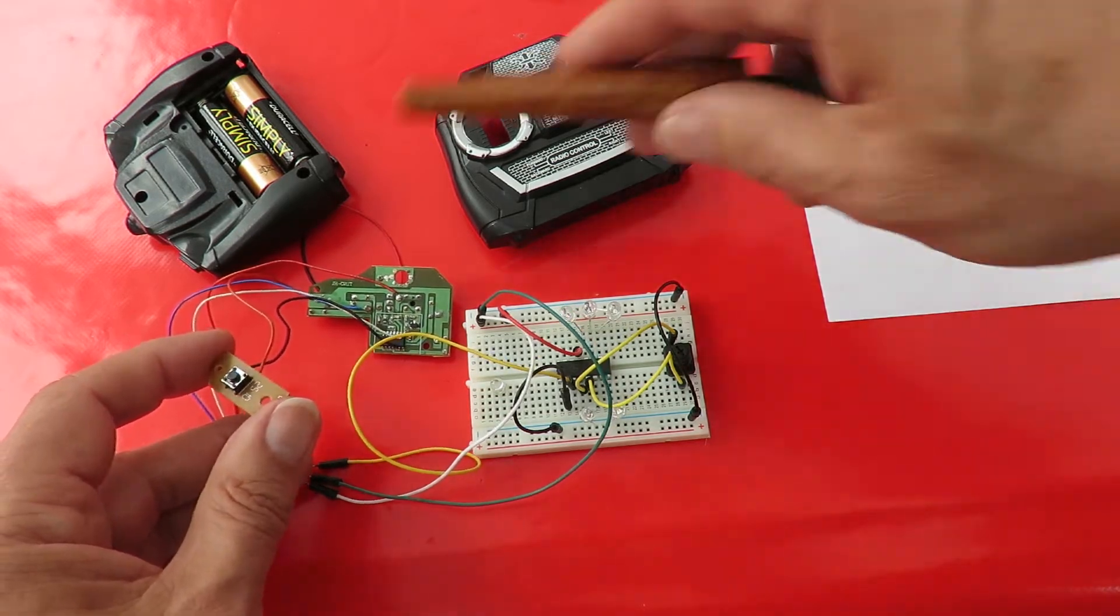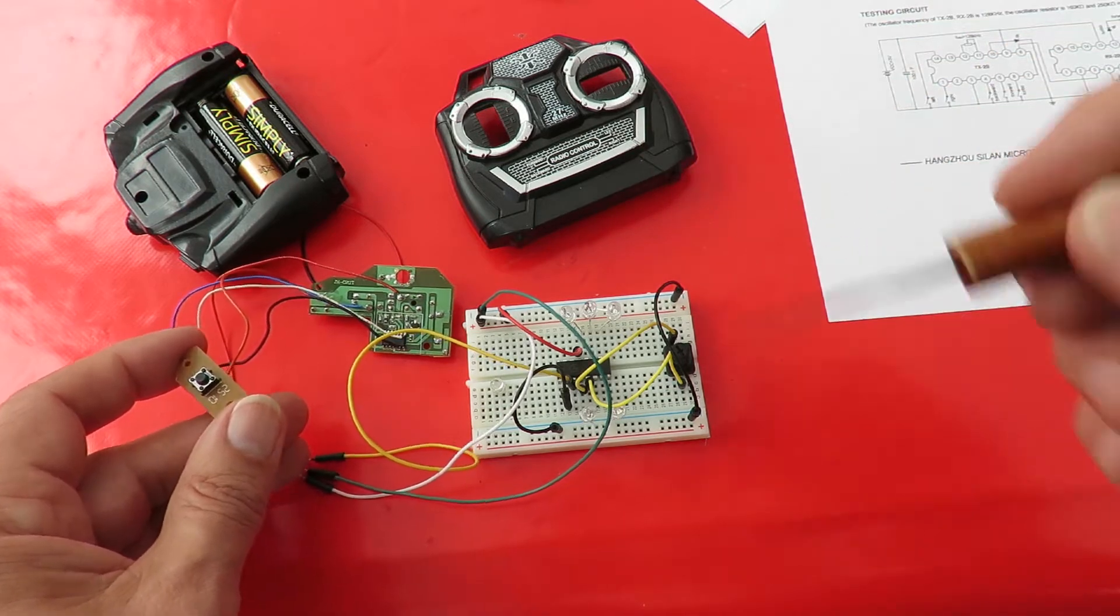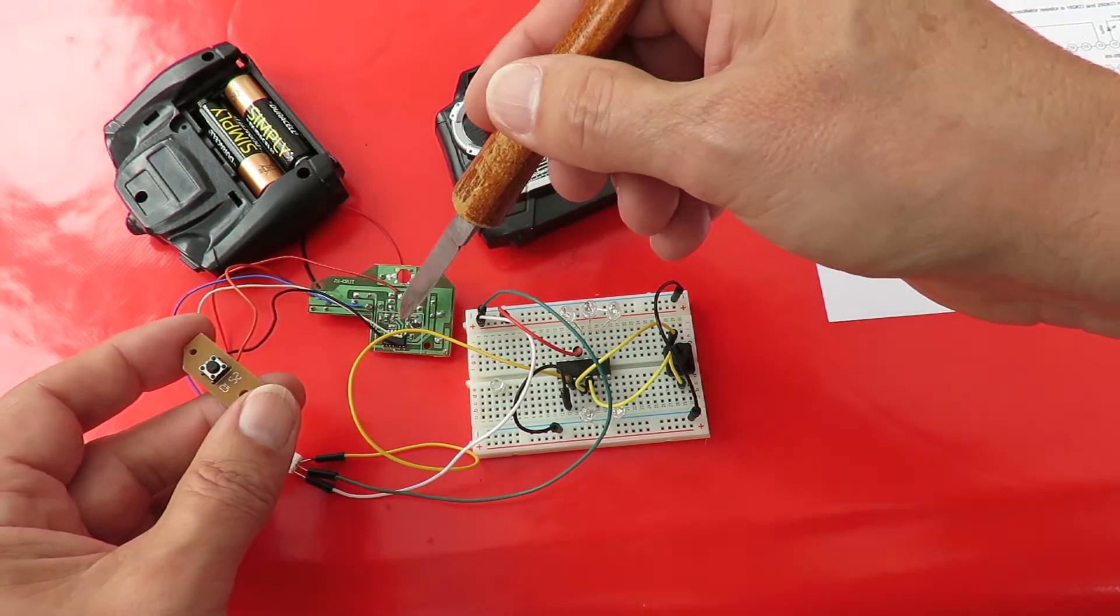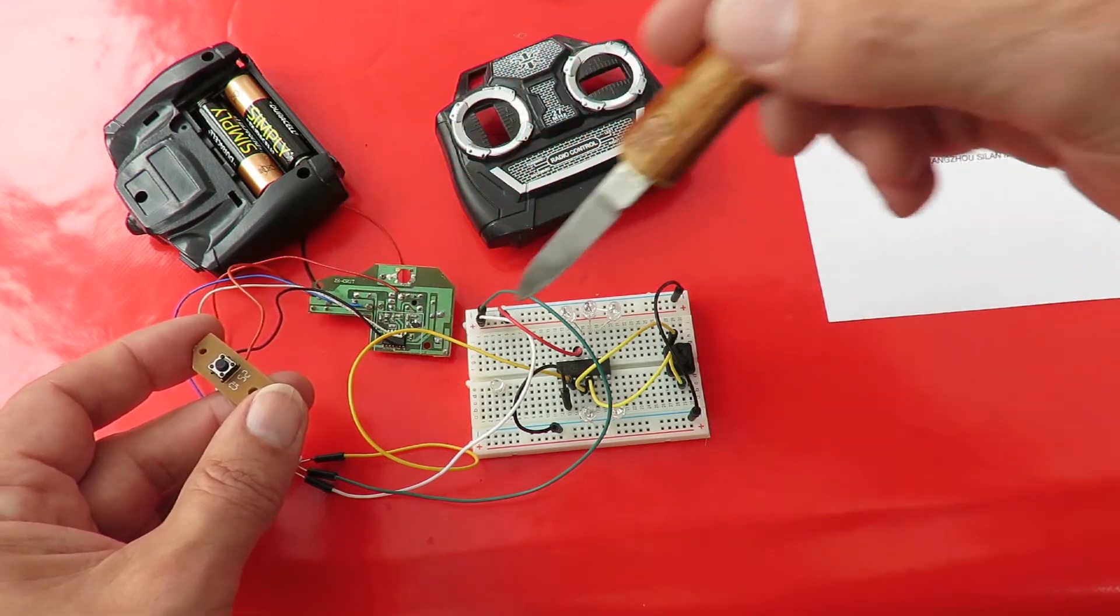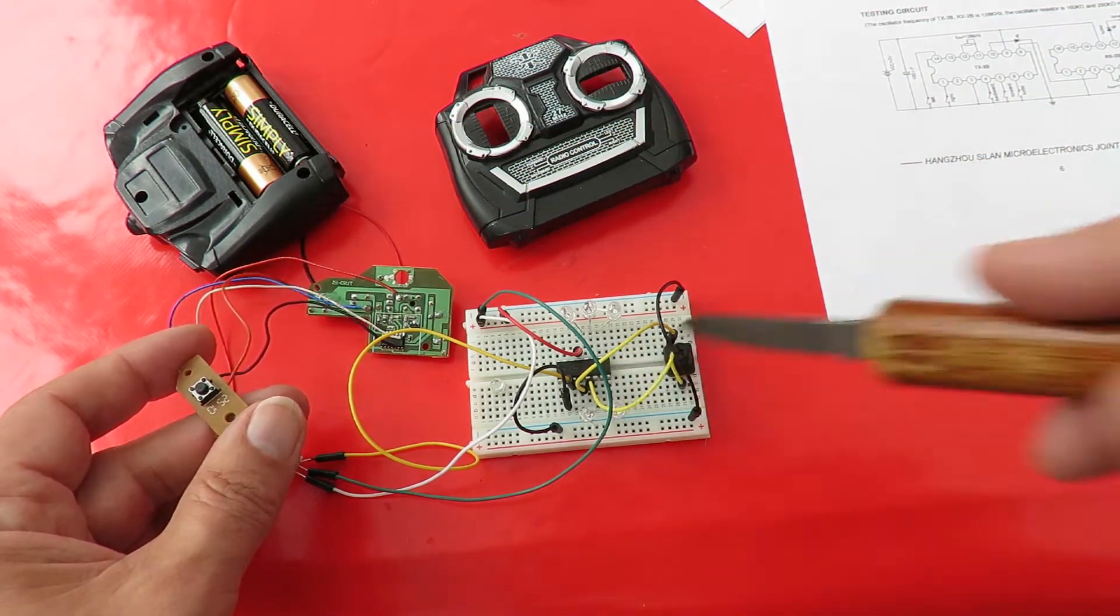So this is, without using any radio transmission, we're just using the signal out from the transmitter chip to go directly to the signal in on the receiver chip.